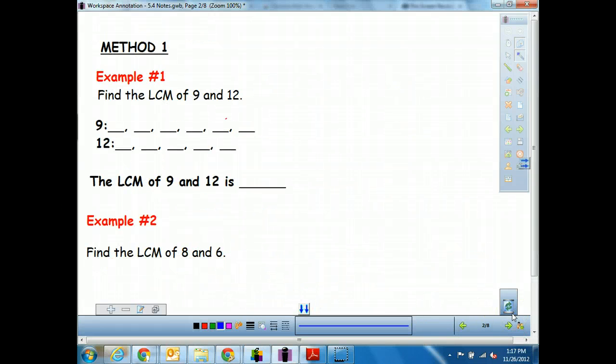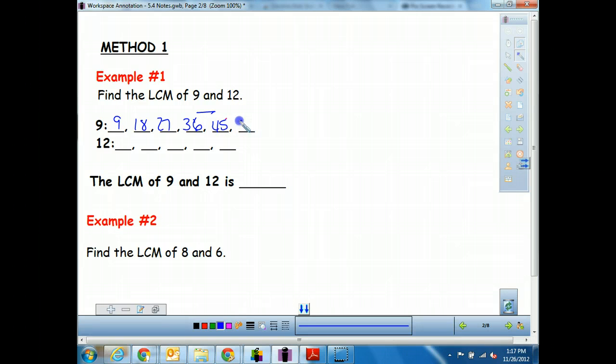Alright, so again, just like we had with greatest common factor, in least common multiple we have two different methods. We could do the first method, which is just like what I just showed you on the last example. We're just going to list them out. So we go 9 times 1 is 9. Then the next one's going to be 18, 27, 36. Oh, my cursor doesn't want to move here. Sorry about that. So now I have 36, then I have 45, and last but not least, 54.